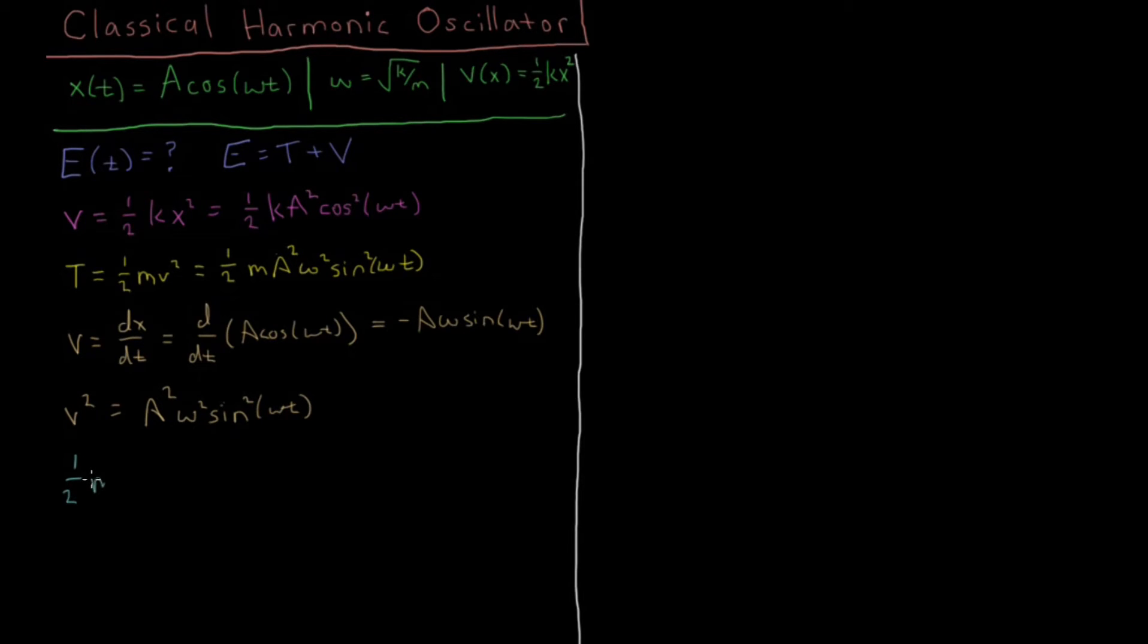We can show that for this mA²ω², we know that omega, as we've defined it up here, is the square root of k over m. So ω² is just going to be k/m, the spring constant over the mass.